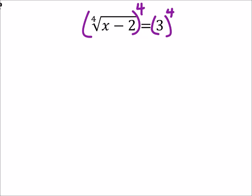So the reason why we're doing this is because if I have four of those x minus 2's multiplied together, the fourth roots then get rid of that root.